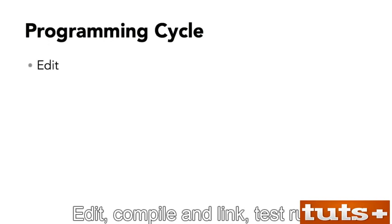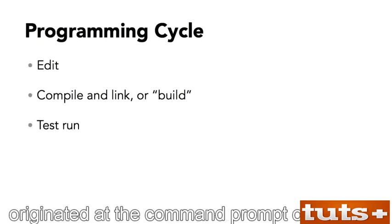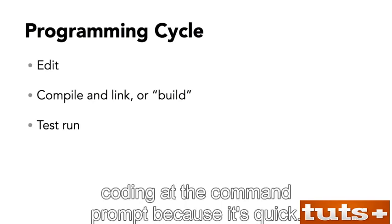The development cycle is: edit, compile and link, then test run. All of these tools — the editor, compiler, and linker — originated at the command prompt or terminal. You can still find them there. I do a lot of coding at the command prompt because it's quick.